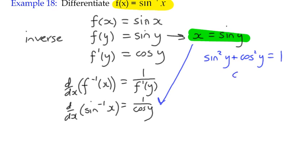Then I can say that cos squared y equals 1 minus sine squared y. And if I take the square root of both sides, then cos y equals the square root of 1 minus sine squared y.